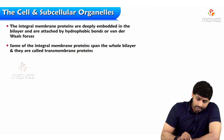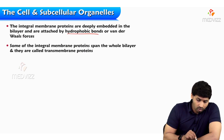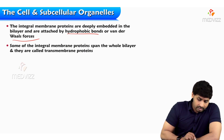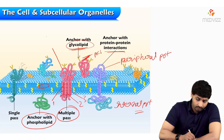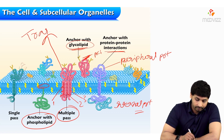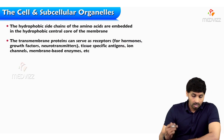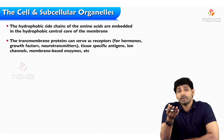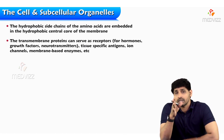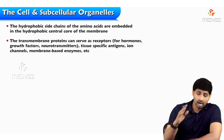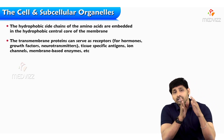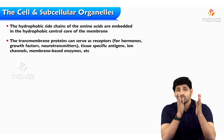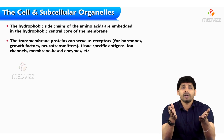The integral membrane proteins are deeply embedded in the bilayer and are attached by hydrophobic bonds or van der Waal forces. Some of the integral membrane proteins span the whole bilayer — they are called transmembrane proteins. The hydrophobic side chains, which are the functional part of the amino acid, are hydrophobic in nature and are embedded in the hydrophobic central core of the membrane. As mentioned, hydrophilic heads are outside and the hydrophobic core or tails are inside, and with these tails the hydrophobic amino acids make interactions.